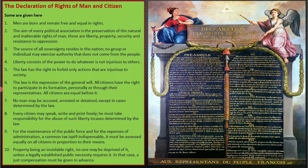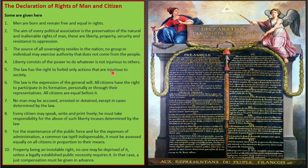According to the Declaration, the rights of life, freedom of speech, freedom of opinion, and equality before the law were established as rights, and it was the duty of the state to protect them. Men remain free and equal in rights. The aim of every political association is the preservation of the natural and inalienable rights of man — liberty, property, security, and resistance to oppression. The sources of all sovereignty reside in the nation; no group or individual may exercise authority that does not come from the people. Liberty consists of the power to do whatever is not injurious to others. The law is the expression of the general will.